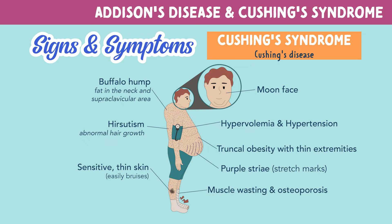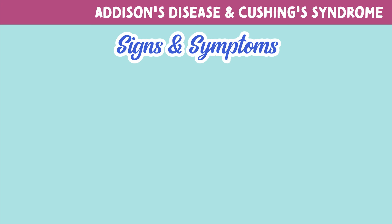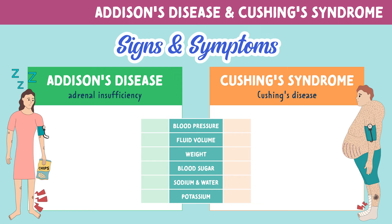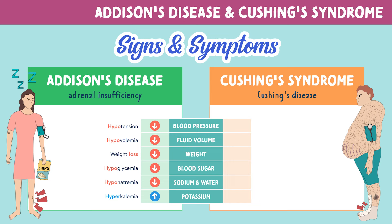Now let's compare side-by-side Addison's and Cushing's. Some findings for patients with Addison's disease are hypotension, hypovolemia, weight loss, hypoglycemia, hyponatremia, and hyperkalemia. A memory trick for remembering these findings is that with Addison's, think arrows down. The only exception to this is hyperkalemia.